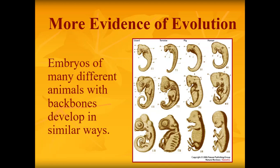More evidence comes from embryology: embryos of different animals with backbones develop in very similar ways. In the early embryonic stage, you can see the lizard, tortoise, pig, and human all start out with a long tail, a backbone, and a head that looks similar. As development continues they start to look different, but they begin very, very similarly. Humans actually have a tail in early development — that tail becomes the base of the spine and slowly recedes. Sometimes people are born with a small knob or even a full tail, which you'll learn more about later.